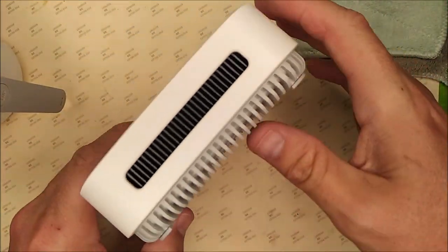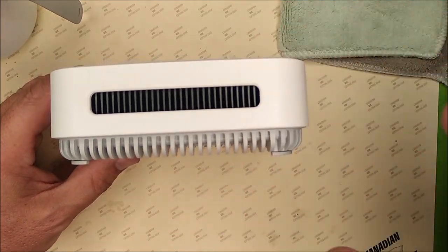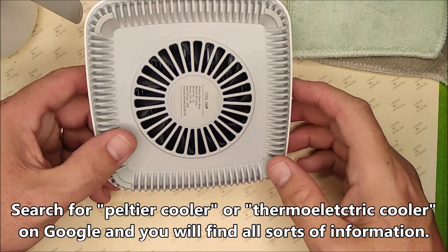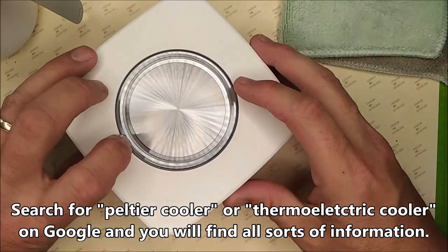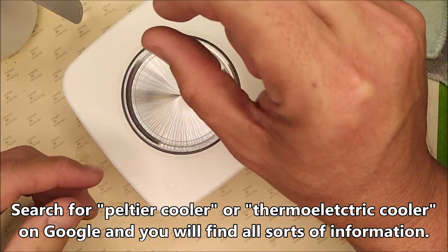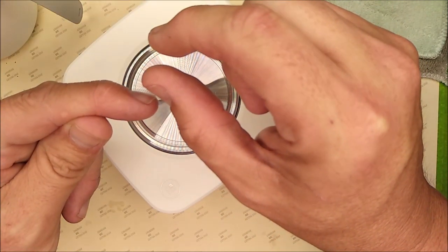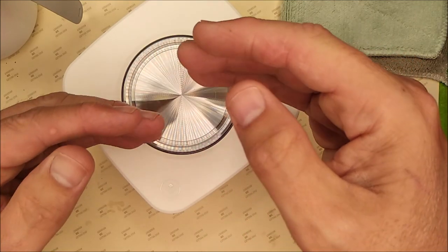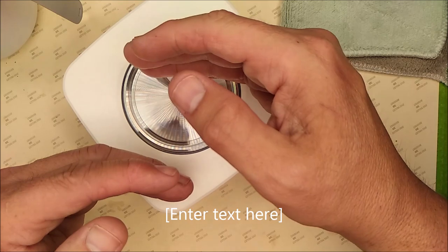So what do we have here? Well, we've got a device that I think is probably a Peltier cooler. Now, what's a Peltier cooler? Well, it's a system, it's a little electronic chip, and what it does is one side gets hot and the other side gets cold.